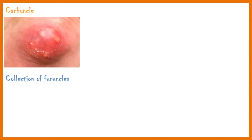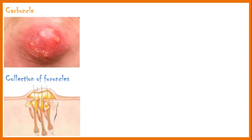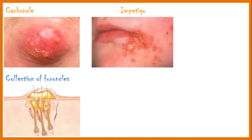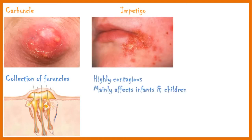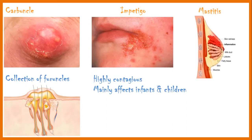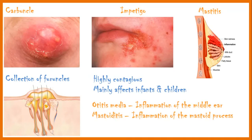This diagram shows the interior view of a carbuncle. Staph is one of the major pathogens to cause impetigo. It is highly contagious and mainly affects infants and young children. Mastitis, which is inflammation of the breast tissue, is another condition caused by staph aureus. In addition, otitis media and mastoiditis are other local infections caused by staph.